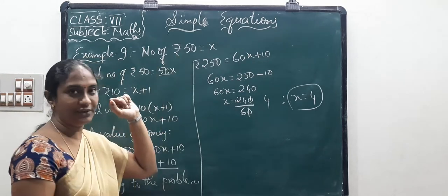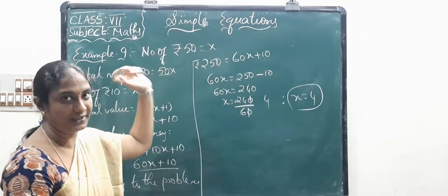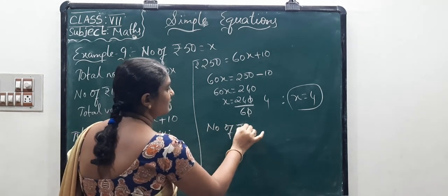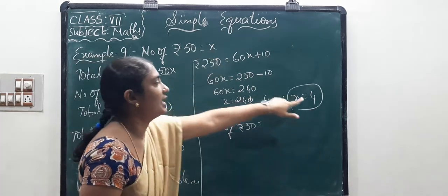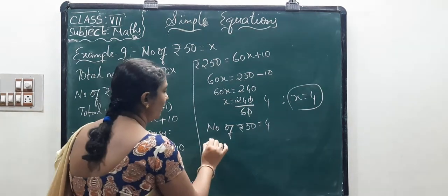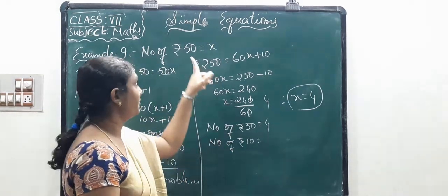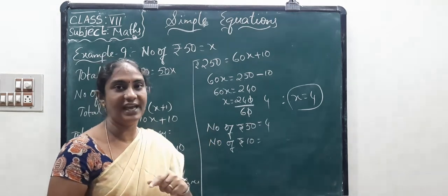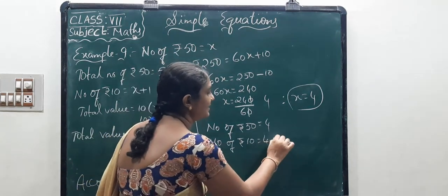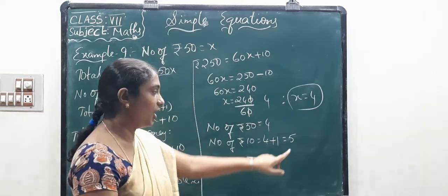Now substitute X equals 4. Number of 50-rupee notes equals X, so that is 4 notes. Number of 10-rupee notes equals X plus 1 equals 4 plus 1 equals 5 notes.